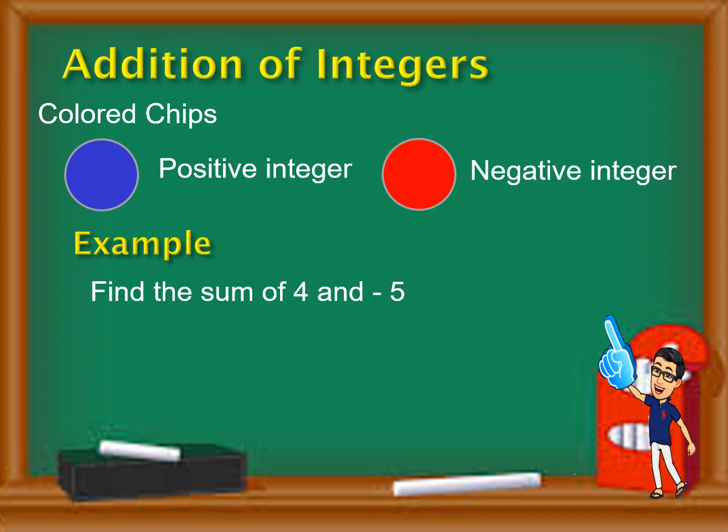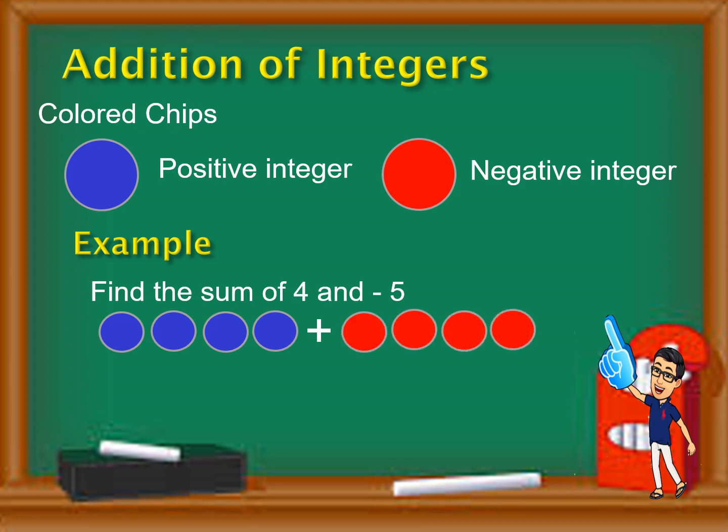Let us apply that with an example. Find the sum of four and negative five. Since four is positive, that represents four blue chips. Plus, since negative five is negative, it will represent five red chips.